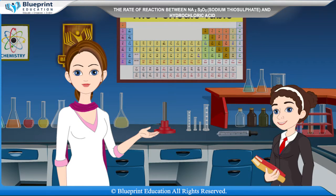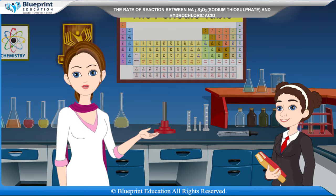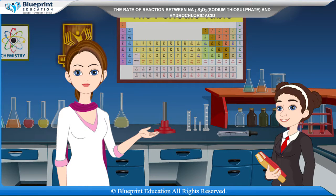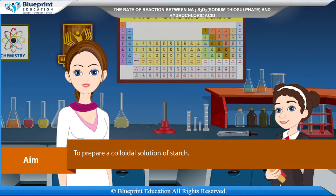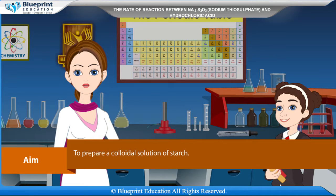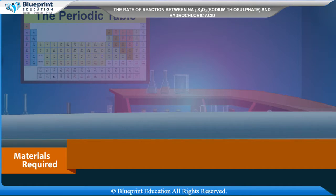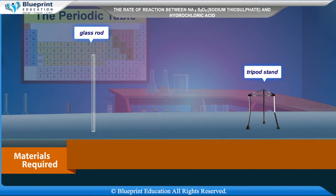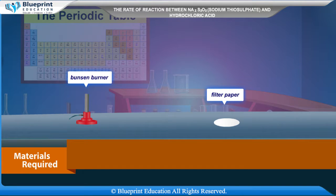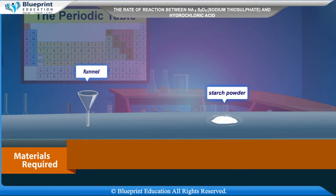Let's do an experiment to prepare a colloidal solution of starch. Our aim is to prepare a colloidal solution of starch. Materials required are: beaker, distilled water, glass rod, tripod stand, Bunsen burner, filter paper, funnel, starch powder, etc.